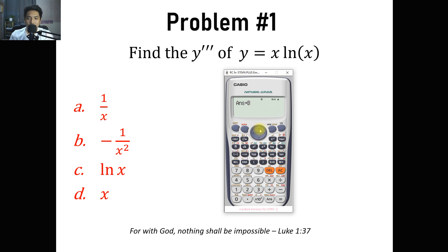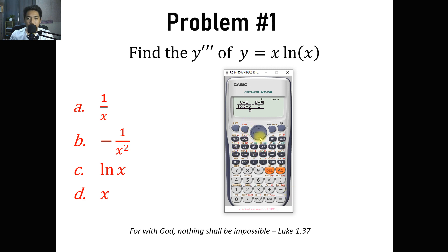Pressing the replay button again, we go now to f prime of x sub 3. This becomes 0.1 plus 2 times 10 raised to negative 5. We get it and Shift Store to C. Now we apply the formula: alpha C minus alpha B all over 1 times 10 raised to negative 5, minus alpha B minus alpha A all over 1 times 10 raised to negative 5, all divided by 1 times 10 raised to negative 5. We get negative 100.0041, and we store that to D.